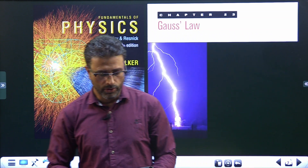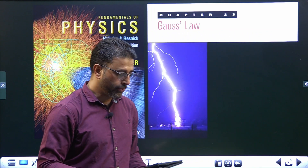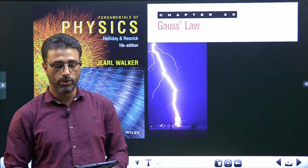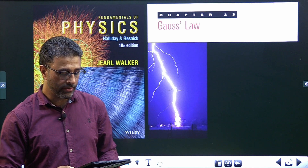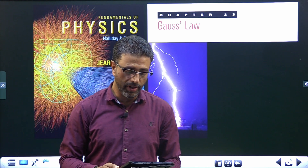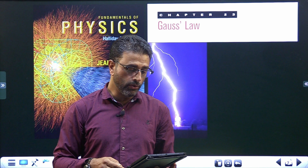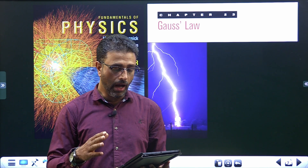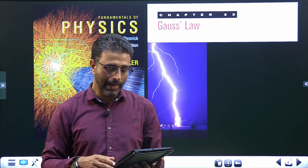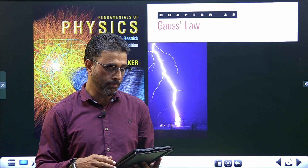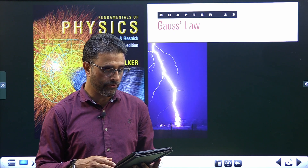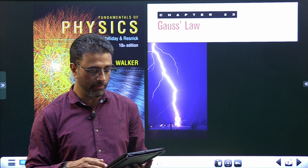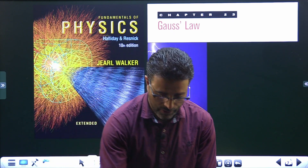Hey guys, question number 10, chapter 23, Gauss's Law. Rank the situations of question number 9 — so it's in continuation with question 9 — according to the magnitude of the electric field: part A, halfway through the shell, and part B, at a point 2R from the center of the shell. Greatest first.